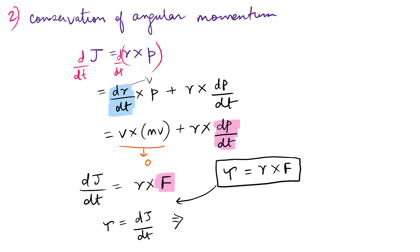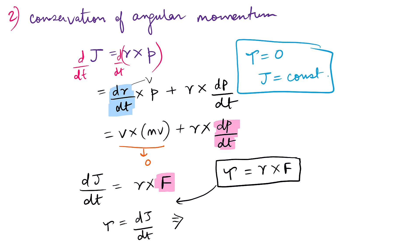Similarly, we can say that if the external torque is zero, then angular momentum is conserved. So the conclusion is: if the external torque τ is zero, then angular momentum is conserved. This is the conservation of angular momentum. I will share the slides so you can print and follow along. Now let's look at number three, which is slightly lengthy but also interesting.